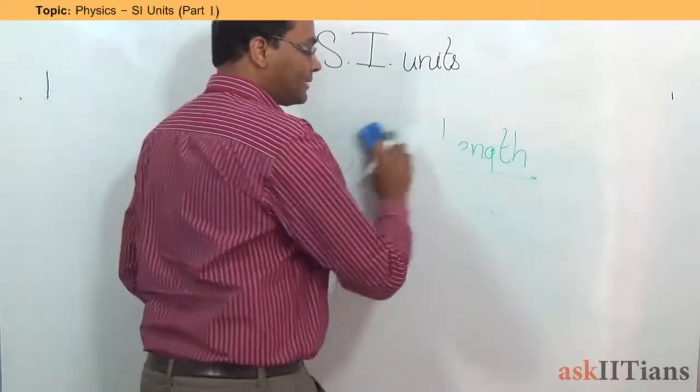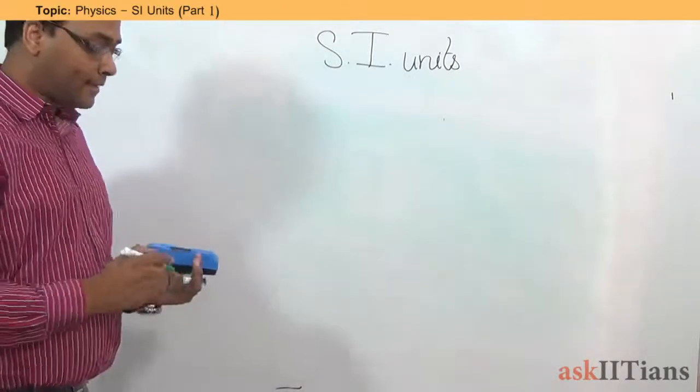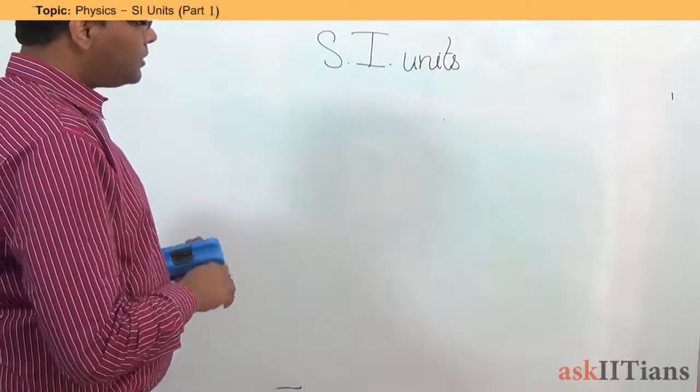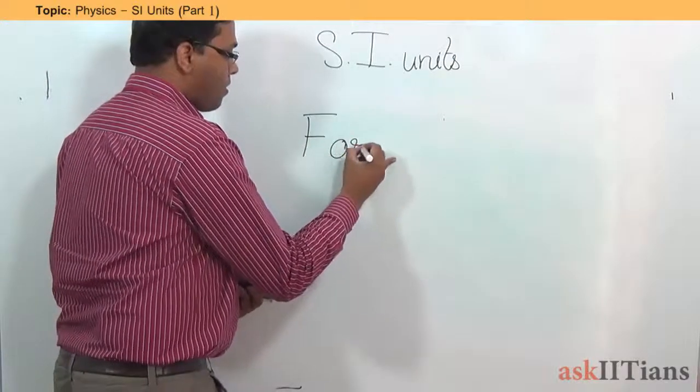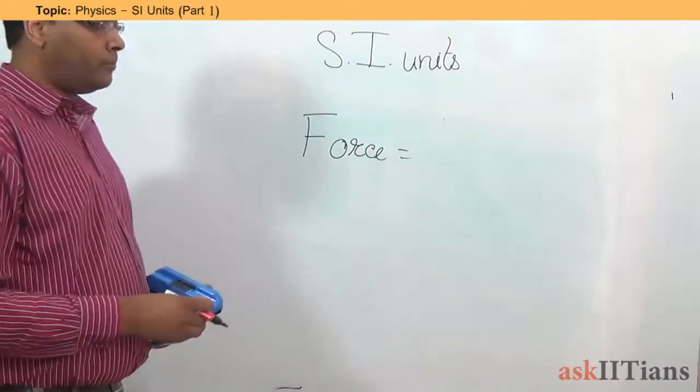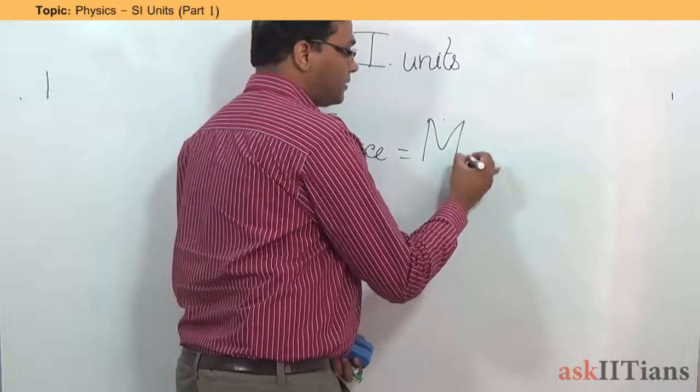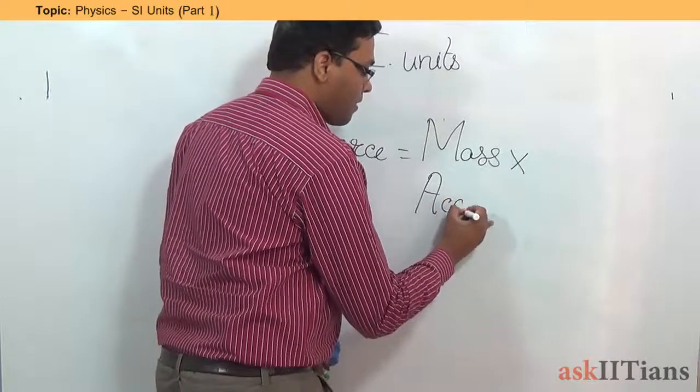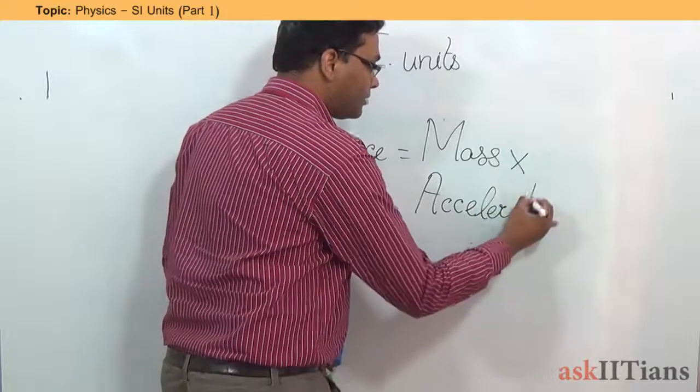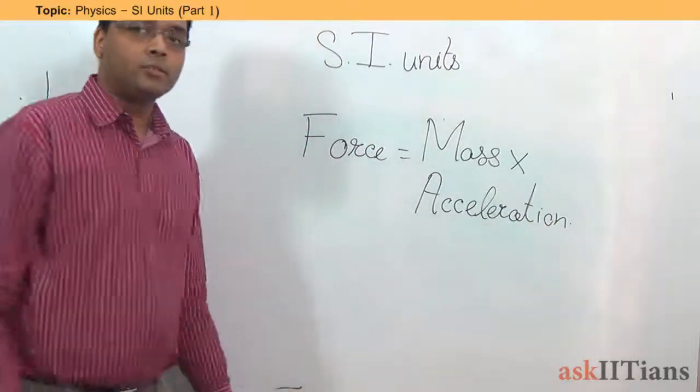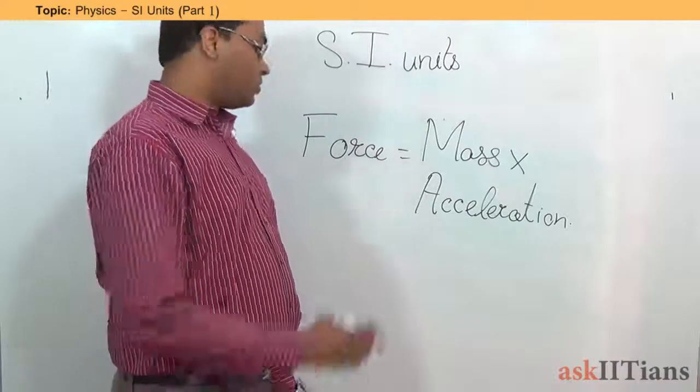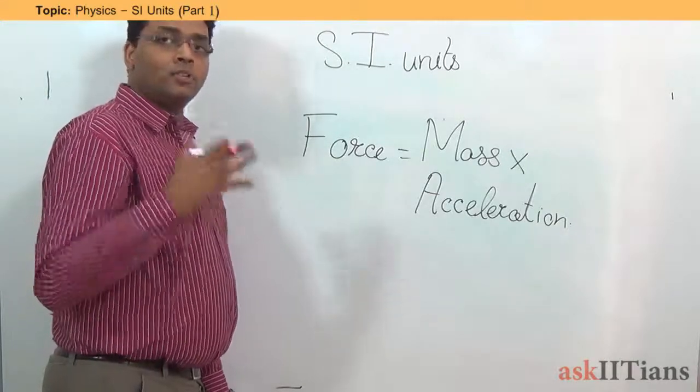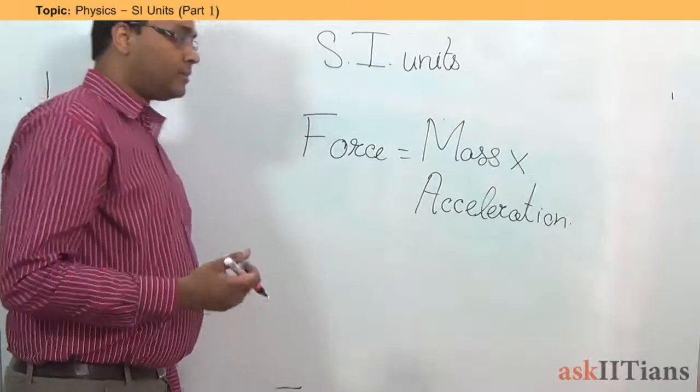Now, since we have defined acceleration, let me tell you what exactly is defined as a force. So, what is the force? Force is going to be equal to the mass of a quantity times the acceleration produced. So, this is how we come to the conclusion of the force. Now, if you have a force that is acting on a particular object, from that force, we can derive other units as well.